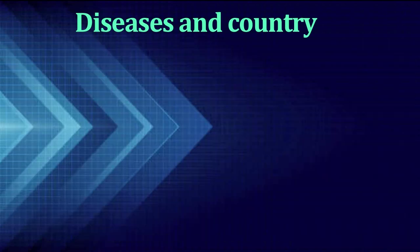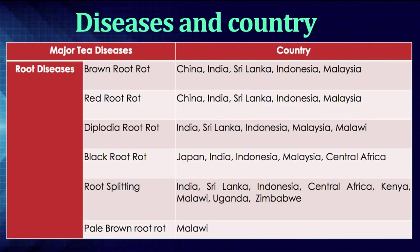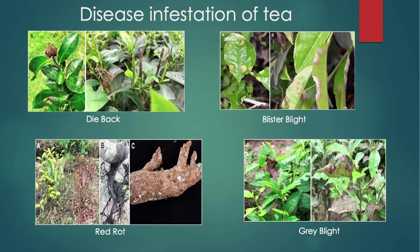Then, what about the root diseases? The different kinds of root diseases are brown root rot and red root rot, seen in countries like China, India, Sri Lanka, Indonesia, and Malaysia. Then, diplodial root rot, which is seen in Indonesia and Malaysia. Then, black root rot, also seen in Japan, India, Indonesia, Malaysia, and Central Africa. These are some diseases which mainly affect the tea plantations.